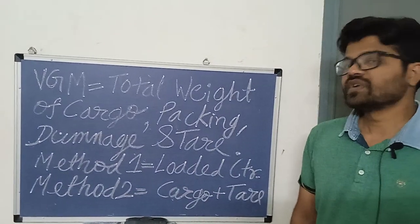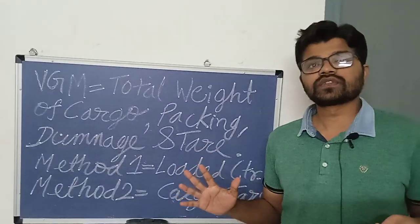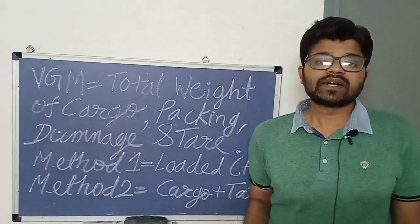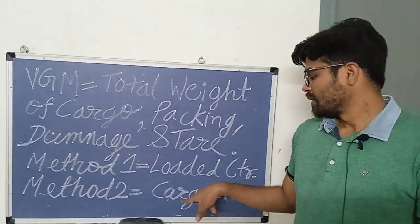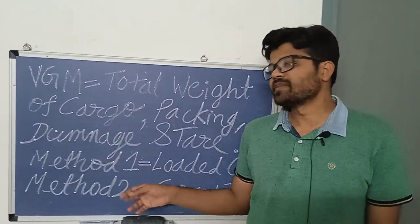Method 2 is the Gross Weight of the Cargo plus Tare Weight of the Container. When these two weights are added, it is known as Method 2.